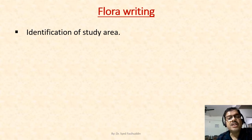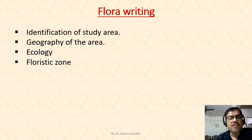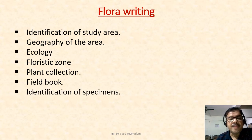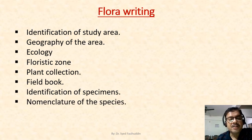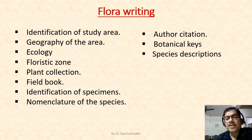The steps to writing a flora begin with identification of the study area, then geography of the region, ecological information, floristic zonation, collection of plants, maintenance of field notebooks, identification of specimens with the help of available literature, nomenclature of new species, incorporation of author citation, botanical keys, species descriptions, and arrangement of families.